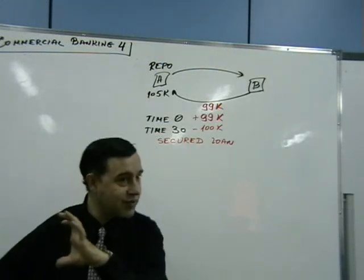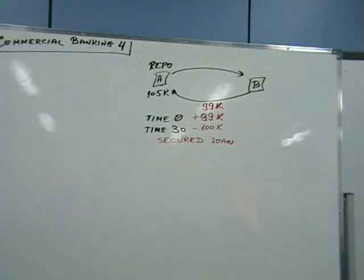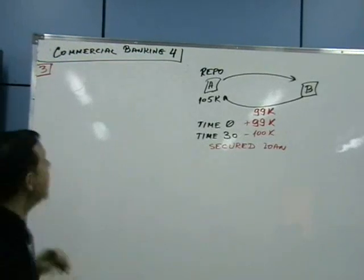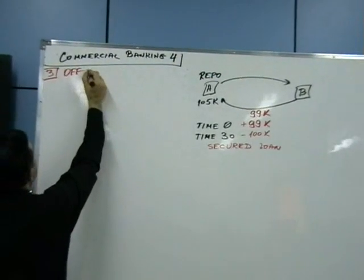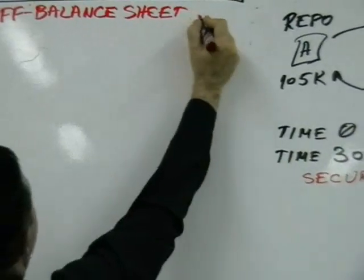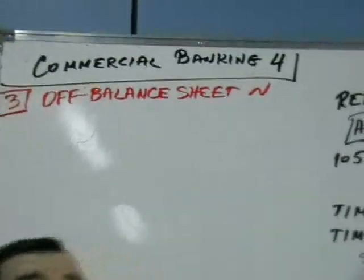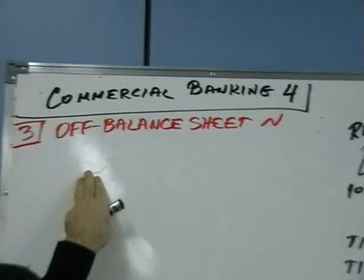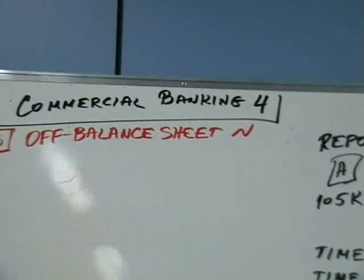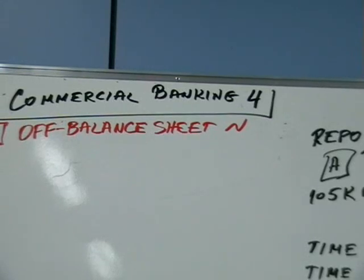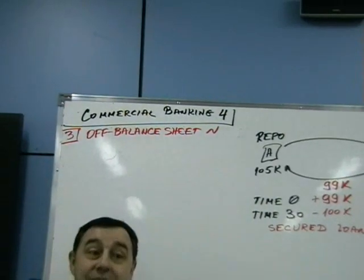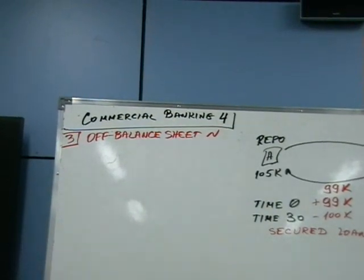The last big section is called off-balance-sheet activities, or off-balance-sheet operations. Bankers love this because these activities don't show on the balance sheet, don't reveal fundamental weakness, and usually banks don't have to set aside liquidity or reserves or capital for some of these transactions. So if bankers can make something off-balance-sheet, they'll try to do it.